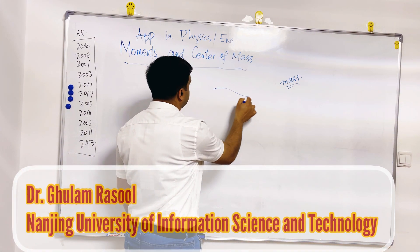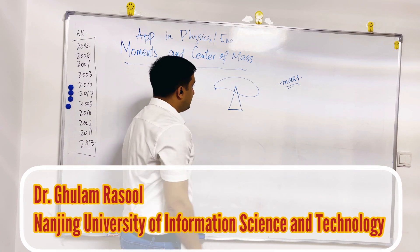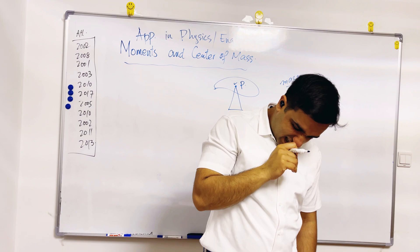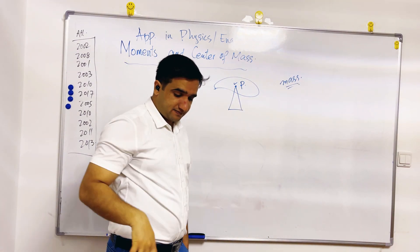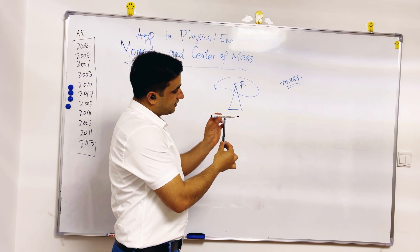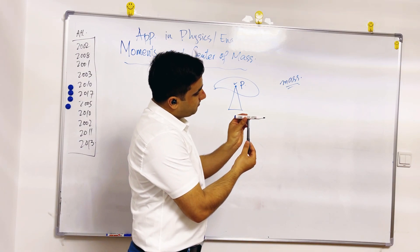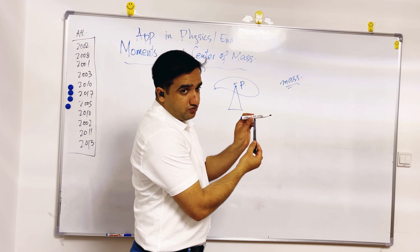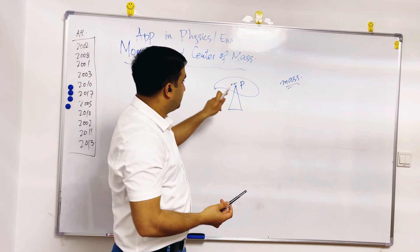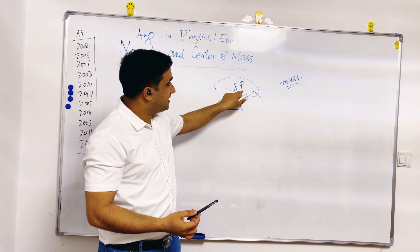If you have a random shape placed on a fulcrum, we are interested in finding the point of that object from which the mass is connected with gravity. We want to balance something on this point. So if you find the exact point which is the center of mass of this object, and you want to balance it on the fulcrum, you need to find that exact point P which is the center of mass.